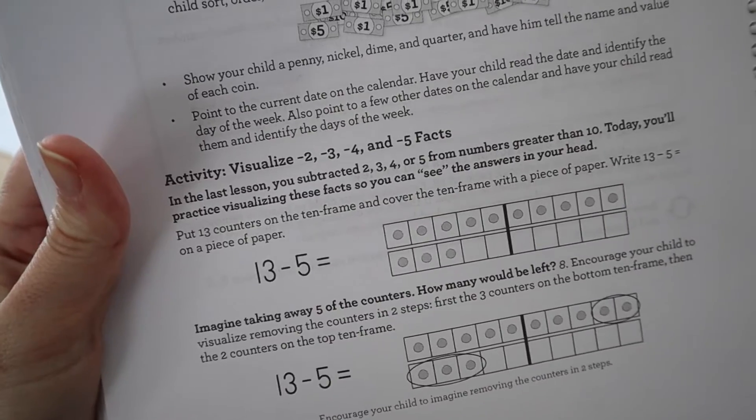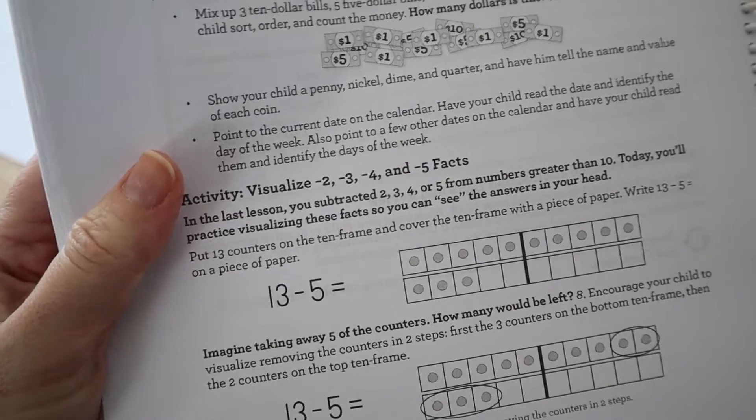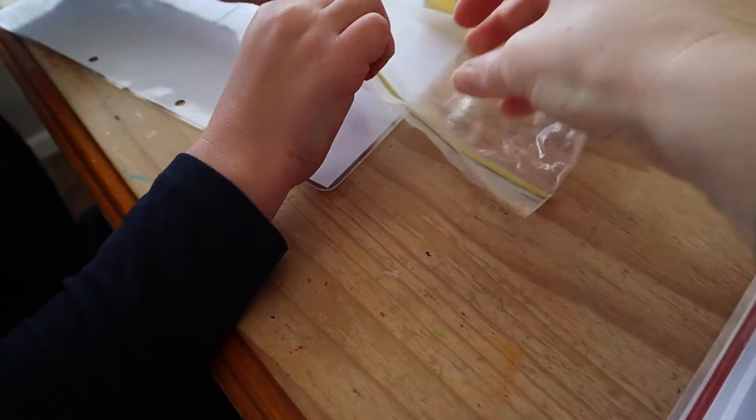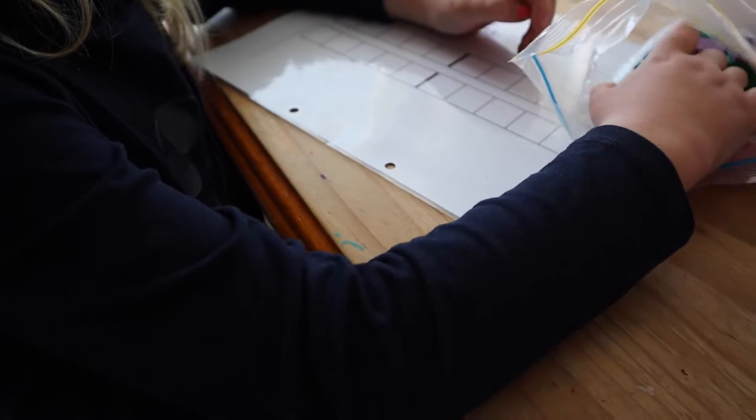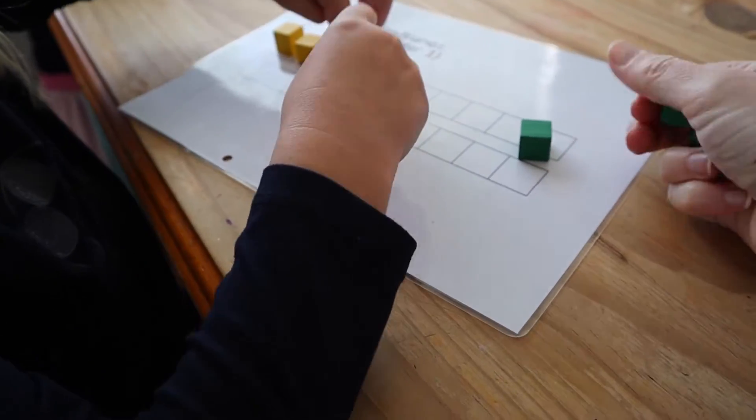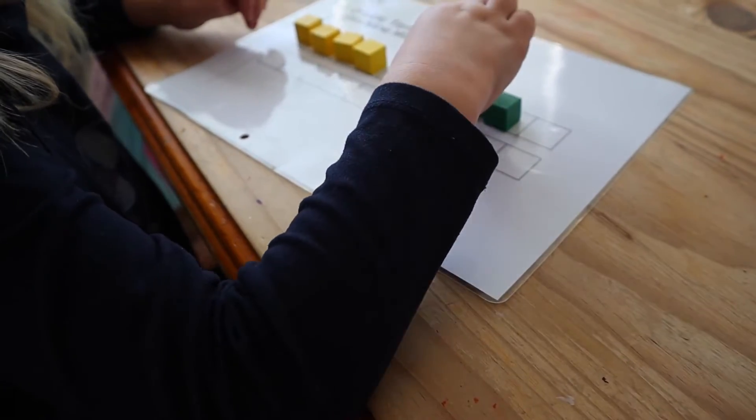All right. In the last lesson, you subtracted two, three, four or five from the numbers greater than 10. Today, you'll practice visualizing these facts so you can see the answers in your head. Okay. So let's put 13 counters on the 10 frame. Can you open that up and put 13 counters on there? Yeah, let's try and make them all the same color. Which color are you going to pick? Actually, I don't know if we have 13 of the same color. So just pick any color. I'm just going to put them any color anywhere. We just want to fill it up. So there's 13 on here.